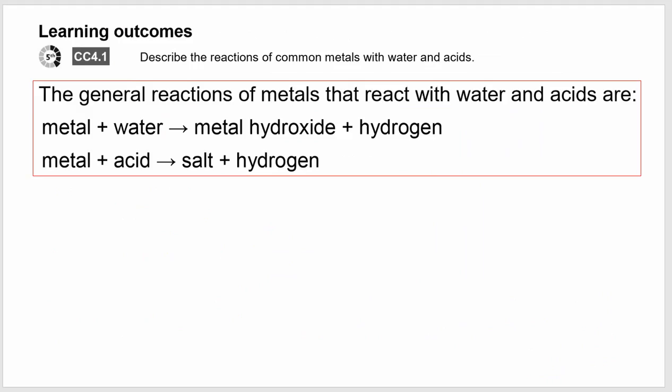So finally, what I want to do is remind you of some general reactions. So you've seen these in other places in the course. A metal plus water makes a metal hydroxide and hydrogen. Of course, the test for hydrogen is lighted splint with a squeaky pop. Metal plus an acid makes a salt and hydrogen. So not a salt and water, but a salt and hydrogen. Make sure you don't get that one mixed up.